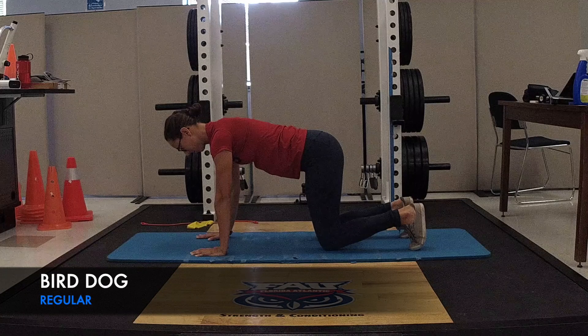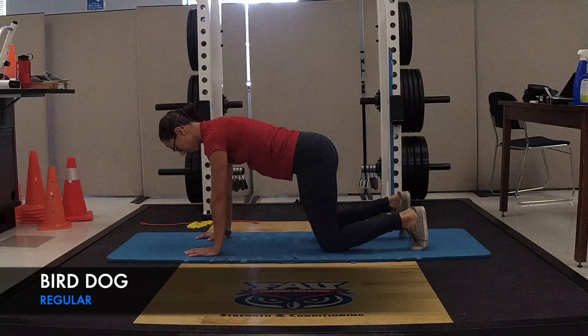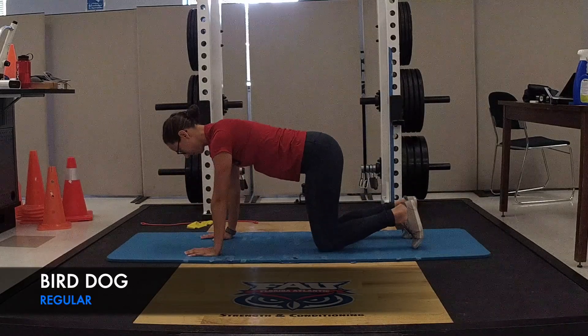First up is the bird dog. The movement starts with four points of contact with hands under the shoulders and knees under hips, and then changes to two points of contact as opposite hand and leg reach for the walls.